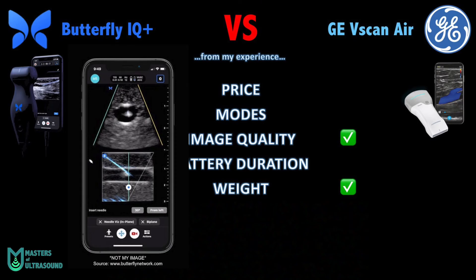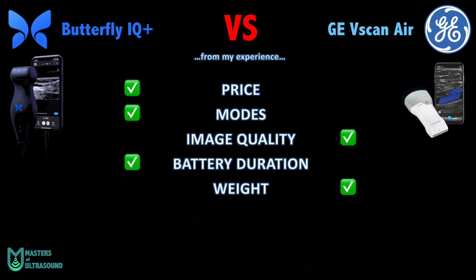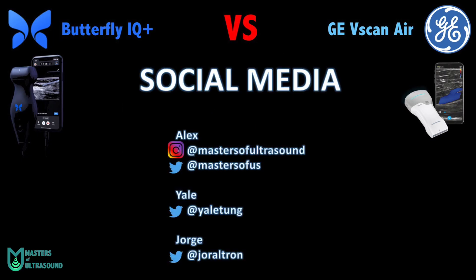The Butterfly IQ has the NeedleViz mode, as shown in this image, which can also be a great help. So if you ask me who the overall winner is, I would say it depends — it's essentially a tie. Each device is better in certain aspects. If price is the limitation, choose the Butterfly IQ. If you want slightly better image quality, choose the Vscan Air. Thank you all for watching — check out our socials if you want to follow us. Bye!